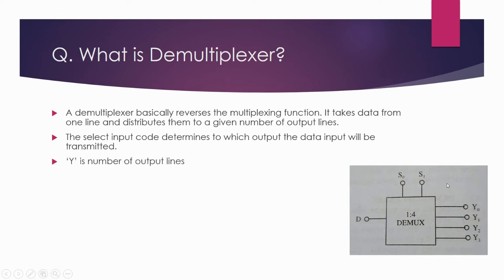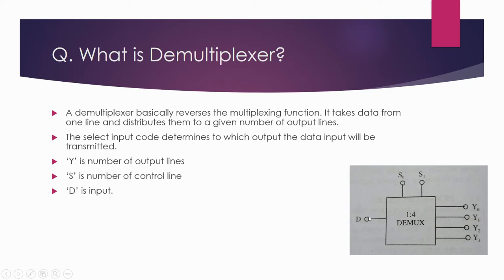Now let's see the naming of this block diagram. Y0, Y1, Y2, Y3 are representing the output lines. S1 and S0 are representing the select lines, which are also known as control lines. Here D is representing the input.